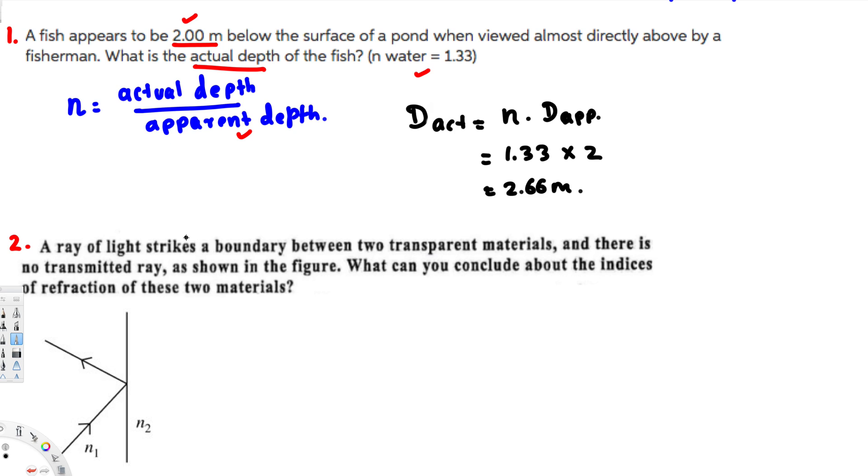Now let's look at the second question. This question is asking: a ray of light strikes a boundary between two transparent materials and there is no transmitted ray, as shown in the figure. What can you conclude about the indices of refraction of these two materials?